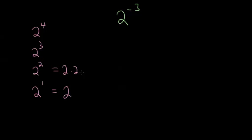2 cubed, that is 3 twos multiplied together, that gives us 8. And 2 to the fourth is essentially 2 times bigger than this, because now we're multiplying by a fourth 2. So this would be 16.